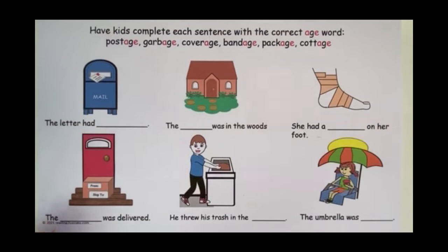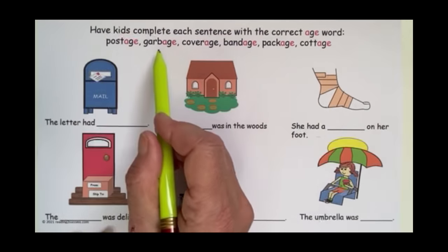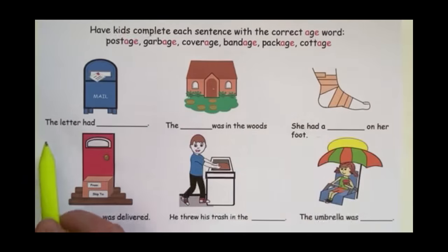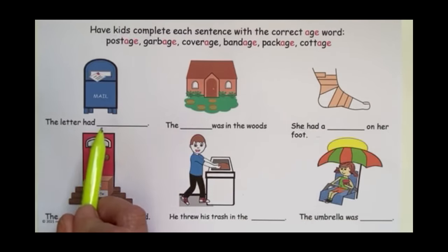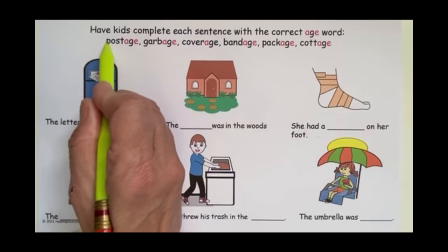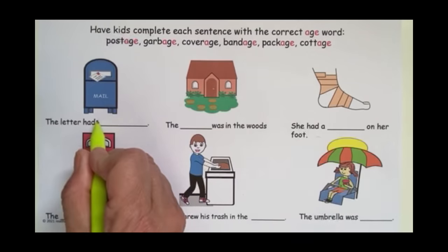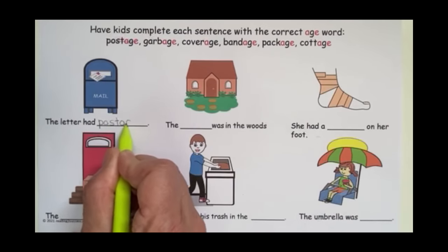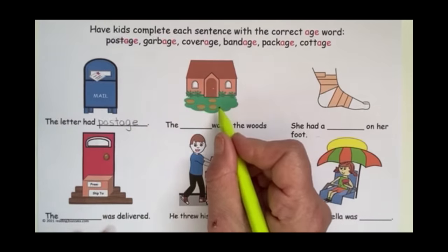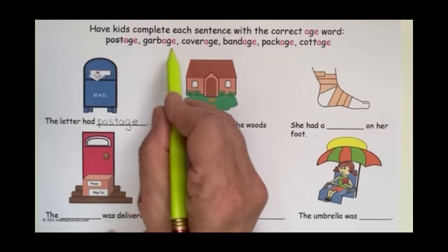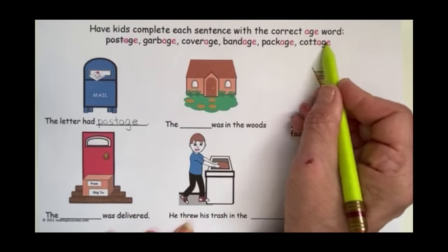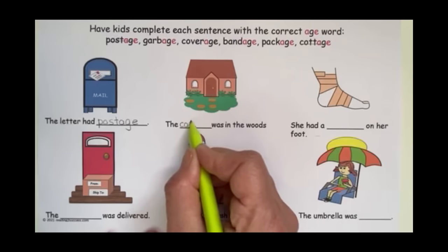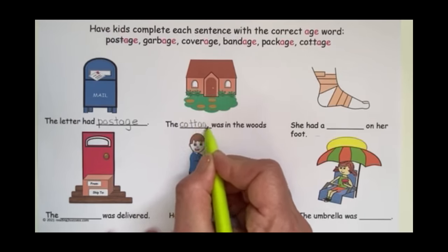So we're going to choose from the words postage, garbage, coverage, bandage, package, and cottage. Let's look at our first sentence: the letter had postage — that refers to the stamp. So we're going to write P-O-S-T-A-G-E. This looks like a cottage. We're going to cross it off and write the word cottage in the space: C-O-T-T-A-G-E. The cottage was in the woods.